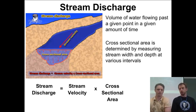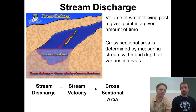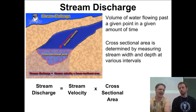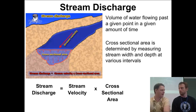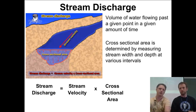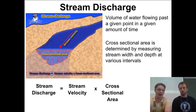We talked about discharge in the last one — now we'll define it here. Discharge is the velocity of the stream times the cross-sectional area. The cross-sectional area is the width of the stream times an average of the depth underneath, because it's not always perfectly square. We're going to do that in a lab where we take averages of depths at given parts of the stream. Overall, discharge equals velocity times cross-sectional area — it's the amount of water passing through at a given time.